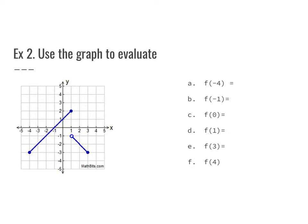For f(negative 4): I go to negative 4 on the x-axis and find a closed circle at y equals negative 3, so the answer is negative 3. For f(negative 1): the line crosses at 0, so y equals 0. For f(0): the line crosses at 1, so the answer is 1. For f(1): there's a solid circle at 2 and an open circle at negative 1 — we always pick the solid circle, so the answer is 2. The open circle means the function doesn't equal negative 1 there.